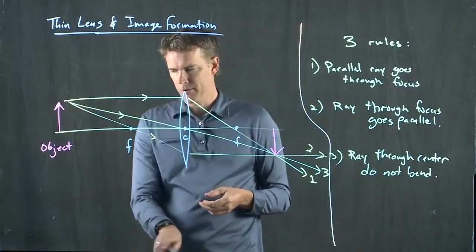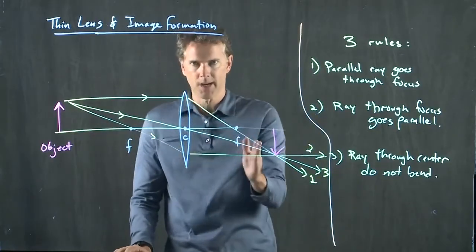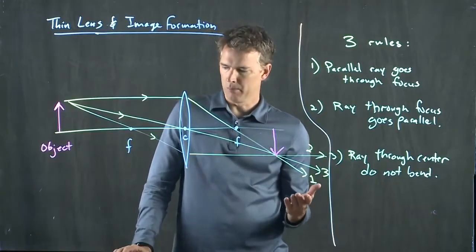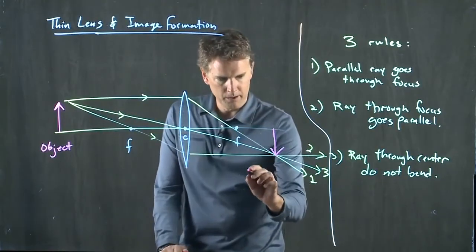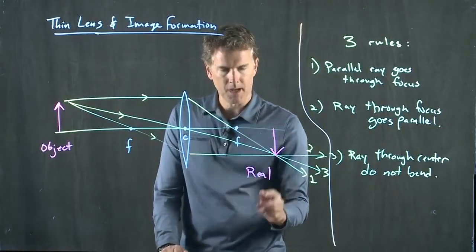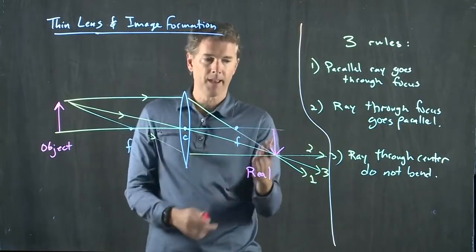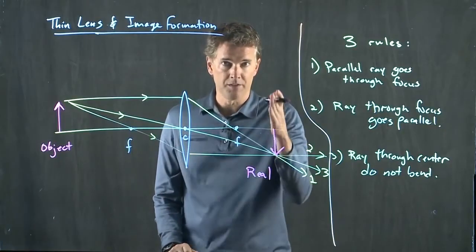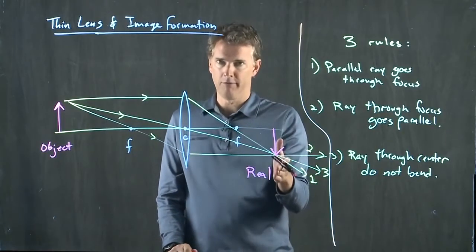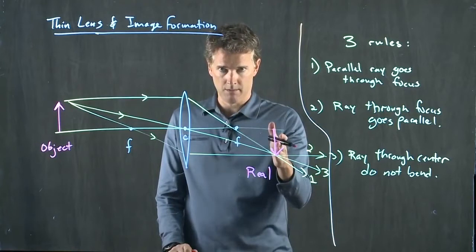And it takes a lot of practice. And as you move this object in and out, it gets a little bit harder and harder to do. This is a real image. In other words, if I put a piece of paper there, I can form an image on it. Or if I put a piece of film there or a CCD array, then I can form an image right there.